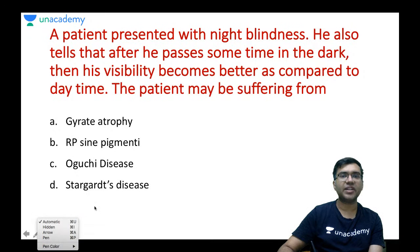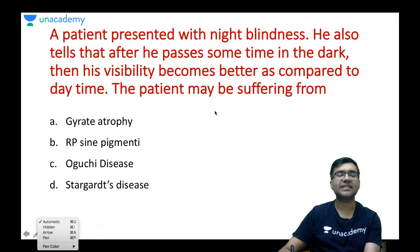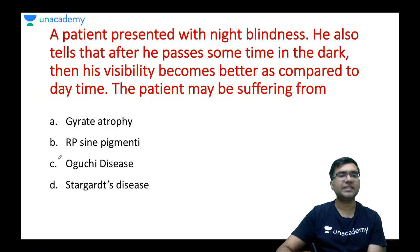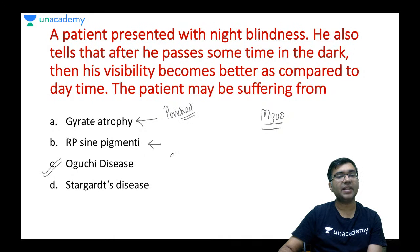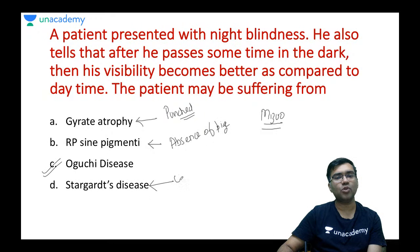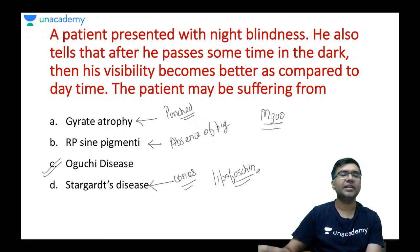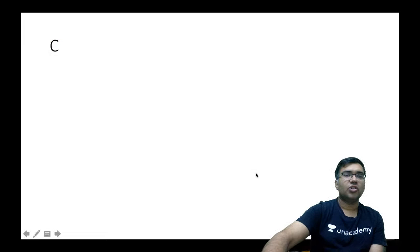MCQ 3: A patient with night blindness who sees better after spending time in the dark — which disease? This is the Mizuo phenomenon seen in Oguchi's disease. In gyrate atrophy there are punched-out lesions; in RP sine pigmento there is absence of pigmentation; in Stargardt's disease, cones are more affected with metamorphopsia and lipofuscin deposits. Answer: Oguchi's disease.